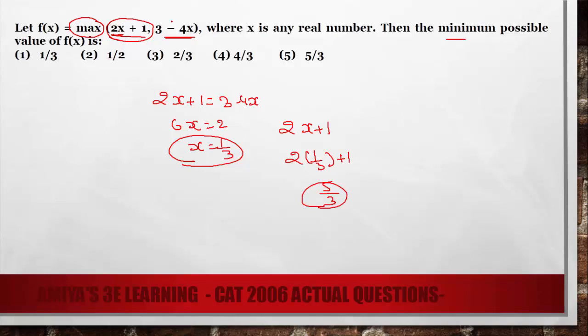So our minima of that maxima function is nothing but option number 5, 5/3. But this is only applicable under some condition and that condition is discussed in great extent in our max-min session.